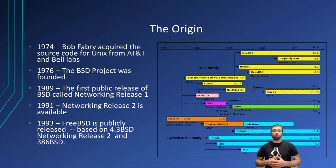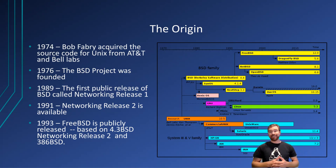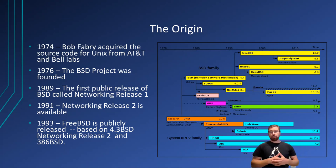Two years after Fabry acquired Unix, in 1976, the BSD project was founded. At the time, BSD contained license code belonging to AT&T. As a result, those who ran BSD were required to attain a license from AT&T just to run the operating system. In June of 1989, the first public release of BSD debuted, called Networking Release 1, commonly referred to as Net 1. After this release, there was an internal discussion of replacing AT&T code, which was proprietary, with new code that was not.